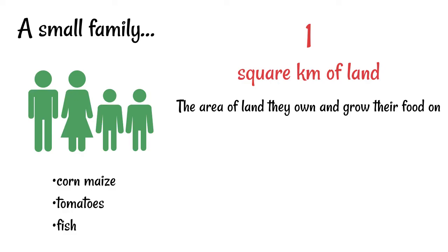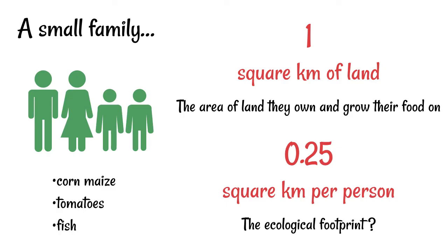Since we've got four people, let's say that they require 0.25 square kilometers per person to survive. Now could we say that their ecological footprint is 0.25 square kilometers per person? Well no, this is drastically oversimplified because the food that is produced is not the only thing that is required.